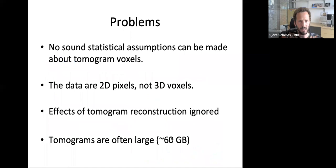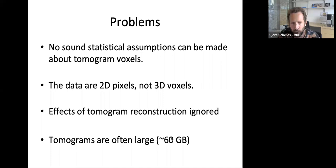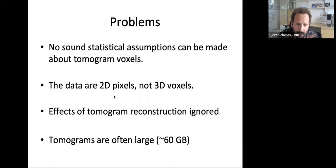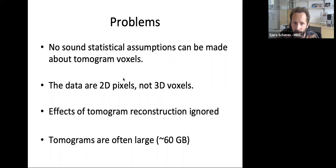Some of the problems are that there is no sound statistical assumption we can make about the signal in the 3D subtomogram voxels. The actual experimental data are in the 2D tilt series images — there are no 3D subtomograms experimentally. If you want sound statistical models about the experimental images, you have to go back to the 2D images in the tilt series. A related problem is that going from 2D tilt series images to 3D tomograms requires a tomographic reconstruction algorithm, and the effects of that algorithm on signal transfer into the 3D subtomograms were ignored in the previous approach. Also, the original tomograms are often very large and unwieldy.